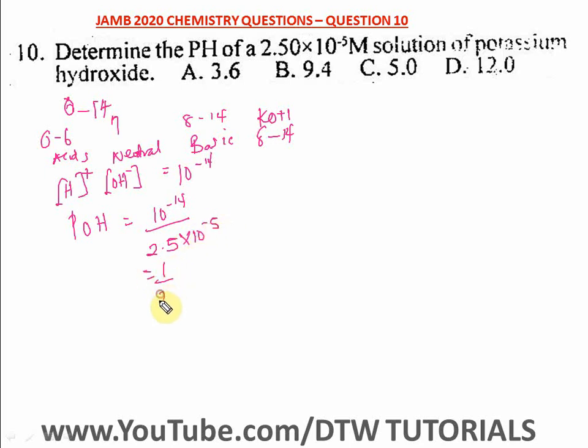From your indices, 1 over 2.5 times 10 raised to power minus 14 minus minus 5 gives us 1 over 2.5 times 10 raised to power minus 9. This is 2 over 5 times 10 raised to power minus 9. When you divide this, you get 0.4 times 10 raised to power minus 9, or 4 times 10 raised to power minus 10.